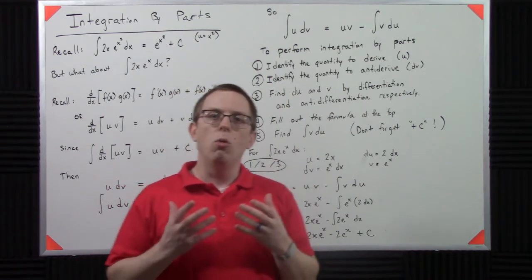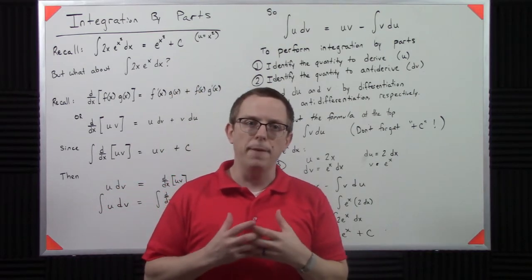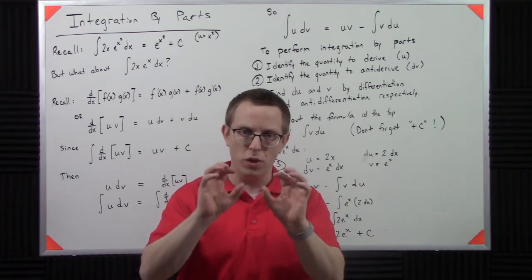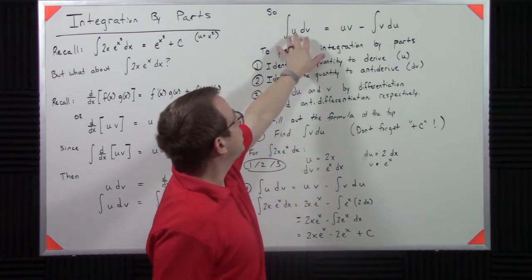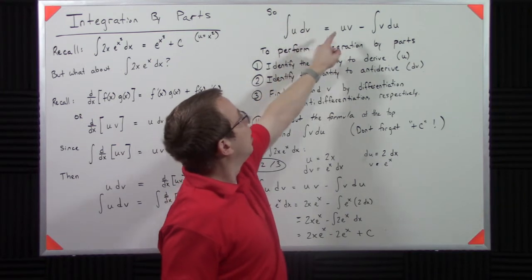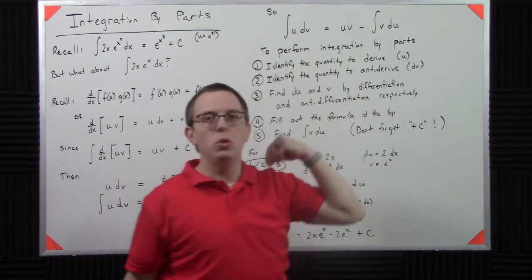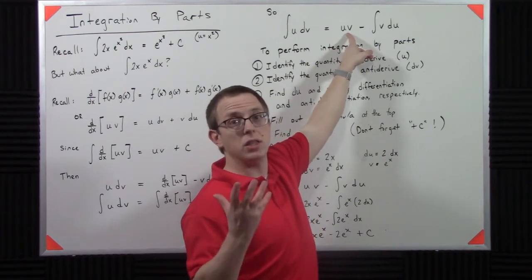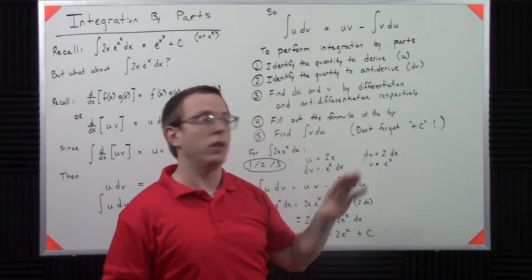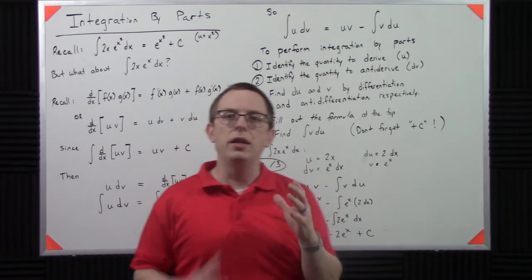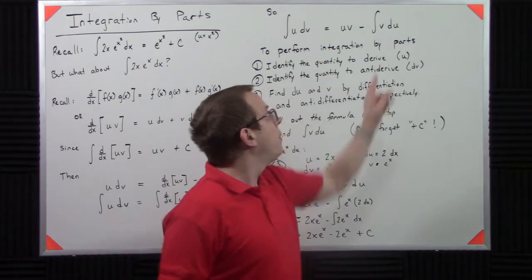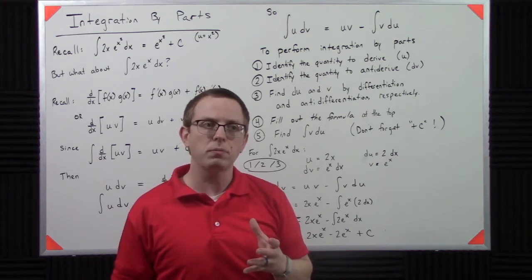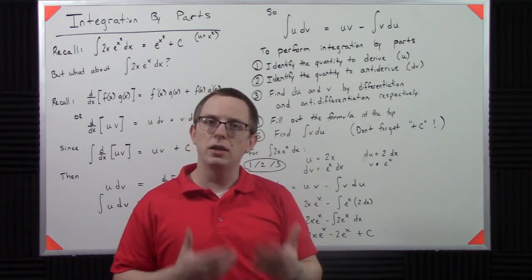So what does this do for us? What this does for us is it says, if I've got two things multiplied together, two functions multiplied together, this gives me a technique of splitting it into some quantity that's not got an integral symbol on it, just u v there. And then it also gives me another hopefully simpler integral to solve.